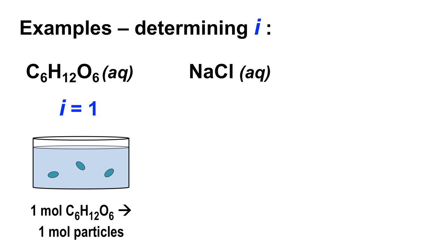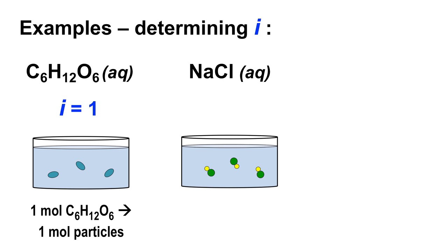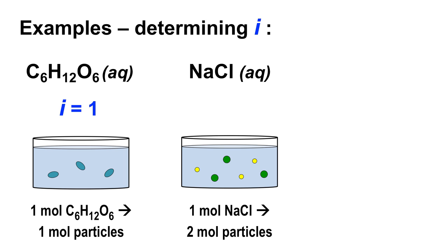Now let's contrast that with sodium chloride in water. Sodium chloride is an ionic compound; when it dissolves, each sodium chloride separates into sodium ions and chloride ions. So if we had three moles of NaCl in a kilogram of water, we'd get six moles of particles, because each mole of NaCl makes one mole of Na⁺ and one mole of Cl⁻. Since we get two moles of particles per mole of solute, the Van't Hoff factor i for NaCl is two.